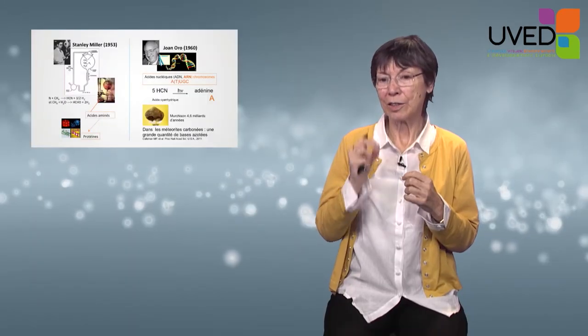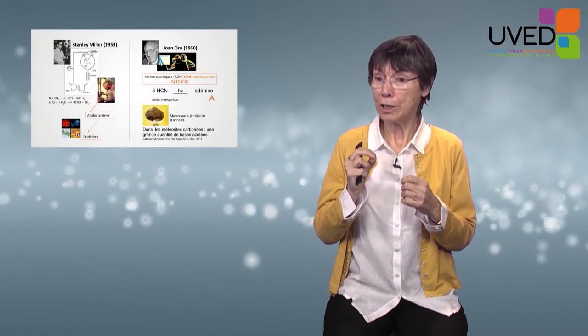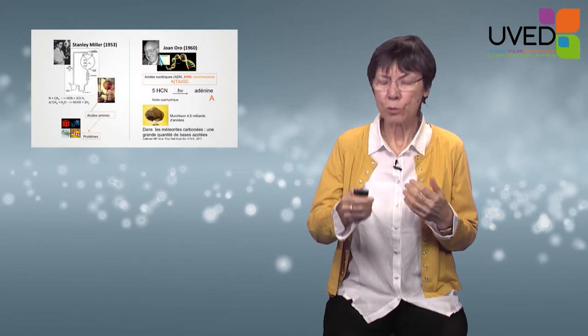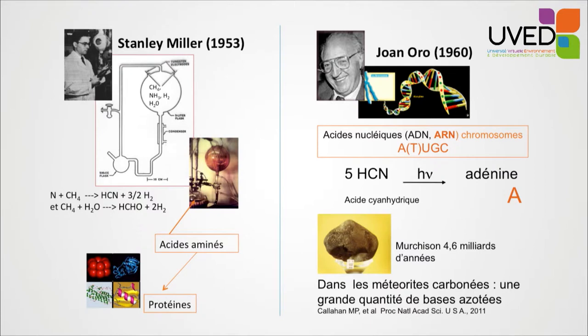A few years later, this experimental revolution led Juan Oro to obtain, in prebiotic conditions with no enzymes, based on hydrogen cyanide (HCN) condensation submitted to photon bombardment, the molecule adenine. Adenine is one of the elementary bricks of nucleic acids, both DNA and RNA. Additionally, in meteorites, a large number of nitrogen bases were found — the bases that make up nucleic acids. Murchison's meteorite, formed at the same time as the solar system, 4.5 billion years ago, is one such example.